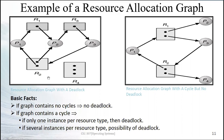When there is a cycle, there is a possibility of deadlock, but when there is no cycle, you can be sure there is no deadlock. If you draw the resource allocation graph and see no cycle, you can directly conclude there is no deadlock. If there is a cycle, you need to further investigate the possibility of deadlock.